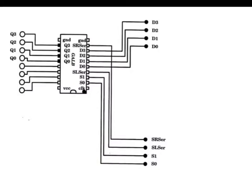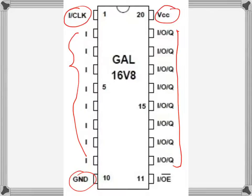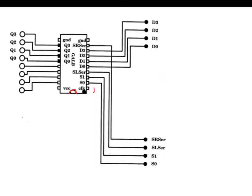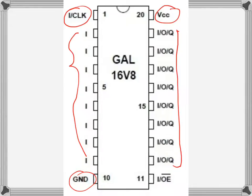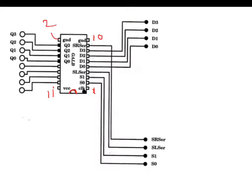The connection will be something like this — it's just wired. We are using these pins. This is the IC with the notch on this side. Pins are numbered 1 through 10 on one side and 11 through 20 on the other side. These are the inputs: the select pins S1 and S0, SL serial, SR serial, and the ground. These are the outputs.